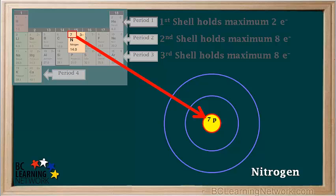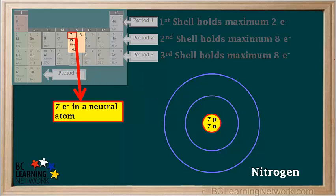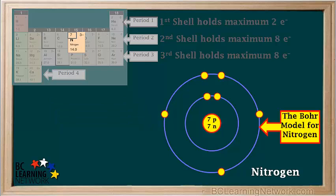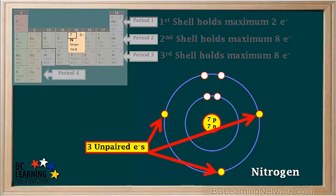Nitrogen has seven protons, and the most common form has 14 minus 7 equals 7 neutrons in the nucleus. A neutral atom of nitrogen has seven electrons: two in the first shell and five in the second shell. The Bohr model usually used for nitrogen shows one electron pair in the second shell — also called a lone pair — and three unpaired electrons.